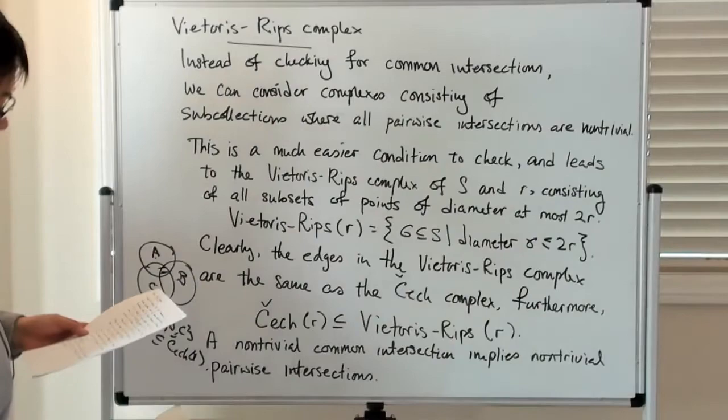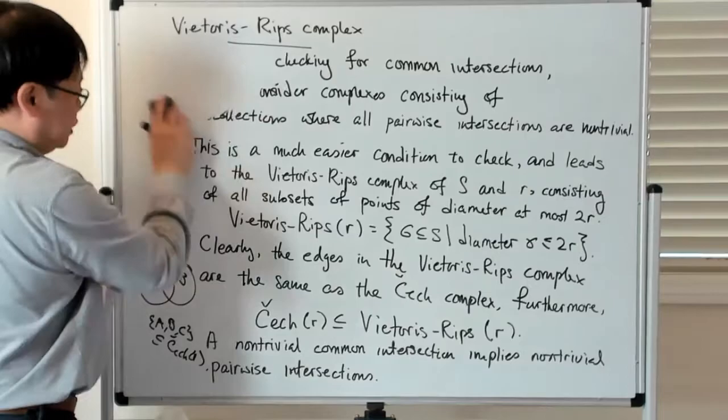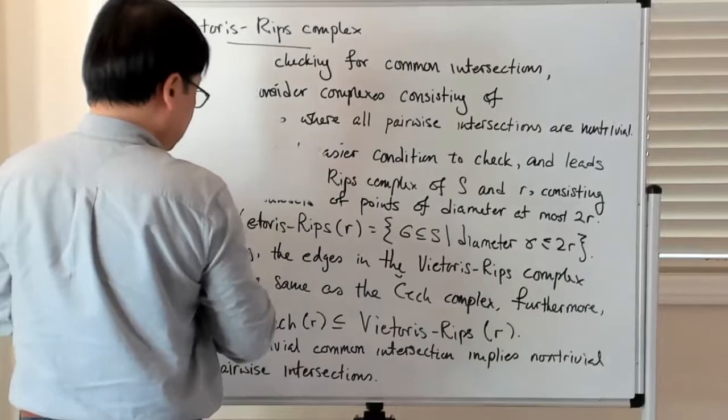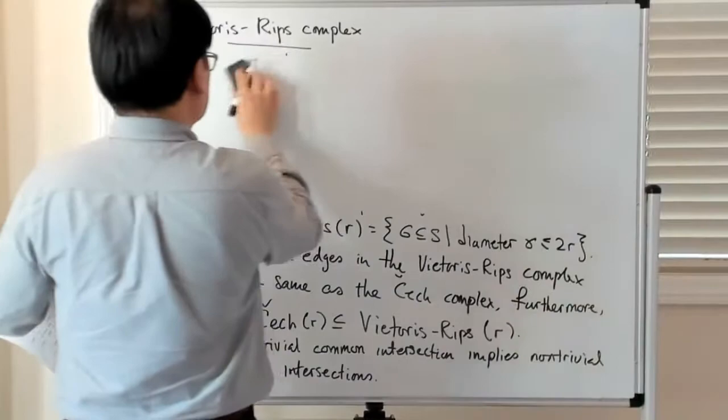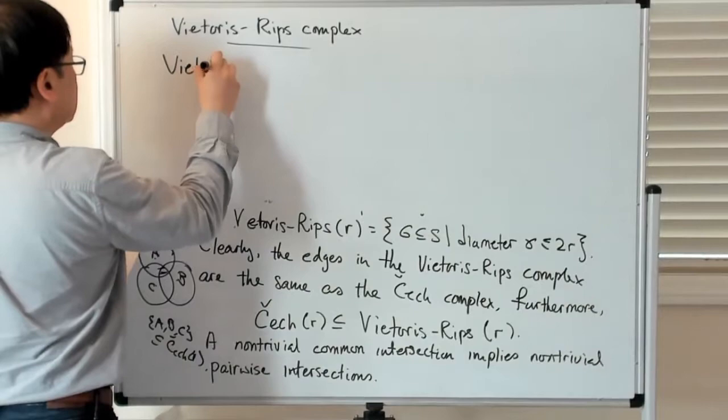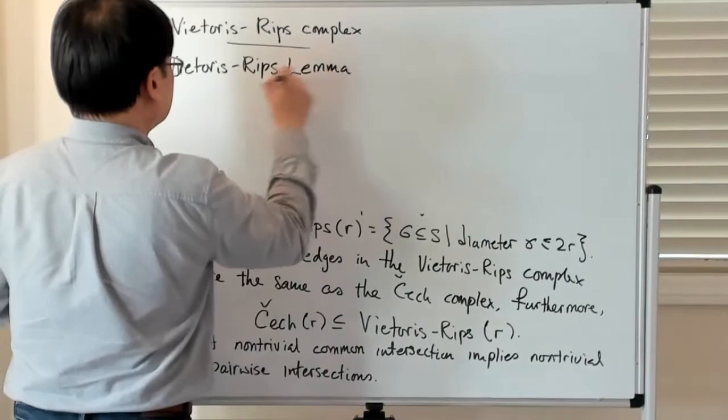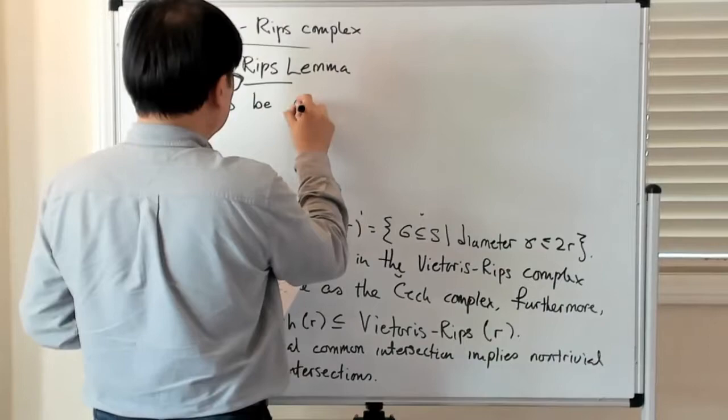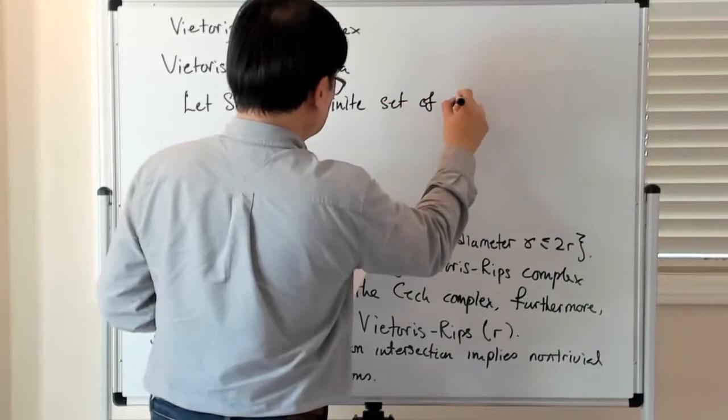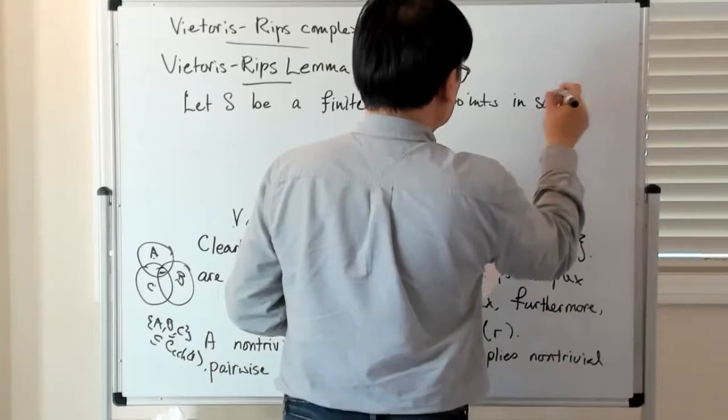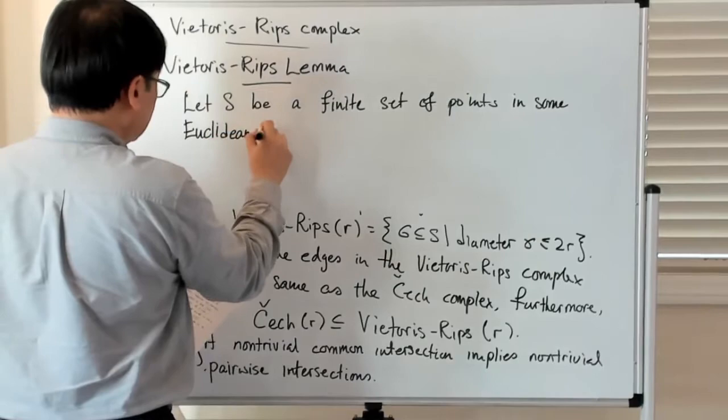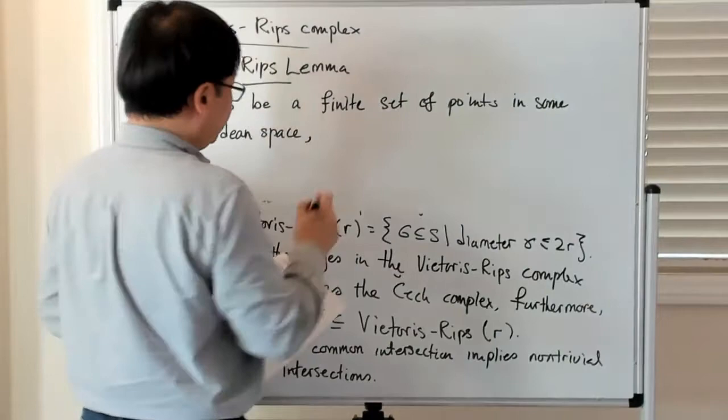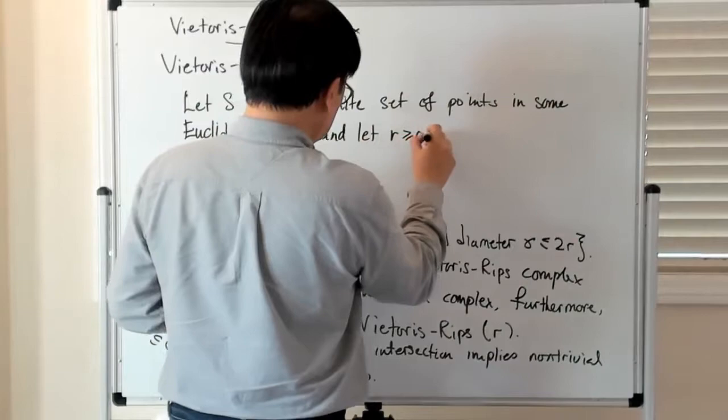So that's basically what is called the Vietoris-Rips Lemma, and I'll state it but I won't prove it. So let me just state this. So the Vietoris-Rips Lemma says something like the Vietoris-Rips complex is contained in some other Čech complex. So let S be a finite set of points in some Euclidean space. The dimension doesn't matter. And then we need R to be greater than or equal to zero.